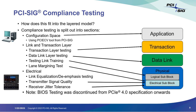PCIe compliance testing fits well into the layered model. Configuration space testing covers enumeration and configuration of devices. Then we have transaction layer testing, data link layer testing, link training testing, and lane margining testing — which occurs at the physical layer in the logical sub-block, so they're logical rather than electrical tests. The electrical testing, which Anthony will cover, is only in the electrical sub-block of the physical layer. BIOS testing on systems was discontinued after PCI Express 4.0; link and transaction layer testing is only done on add-in cards, endpoints, and switches.